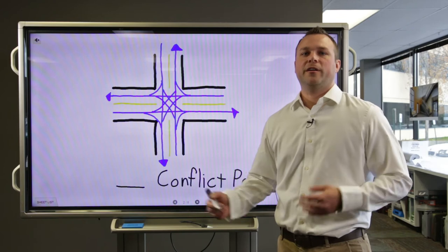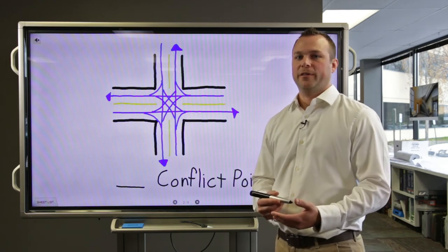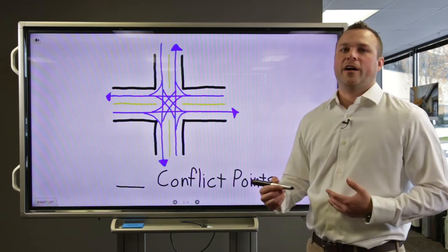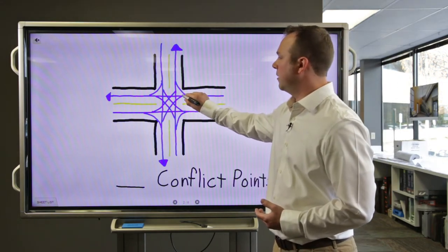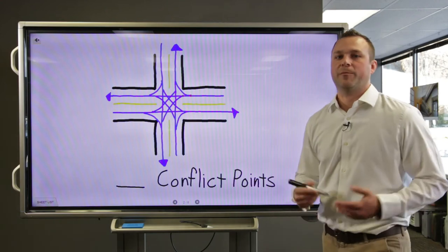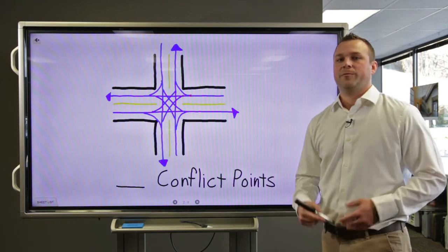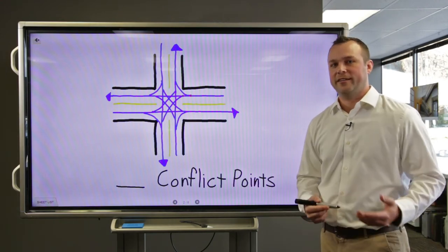That can be a right turn, a left turn, or a through movement. The next thing we'll do is count up all the points where those lines intersect. Each one of those points is what we call a conflict point. It's an opportunity for two vehicles to potentially intersect and get in an accident.